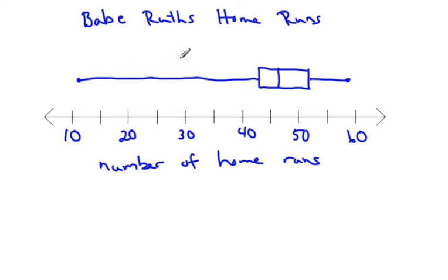And that's how you do a five-number summary, an interquartile range, and a box and whisker plot.